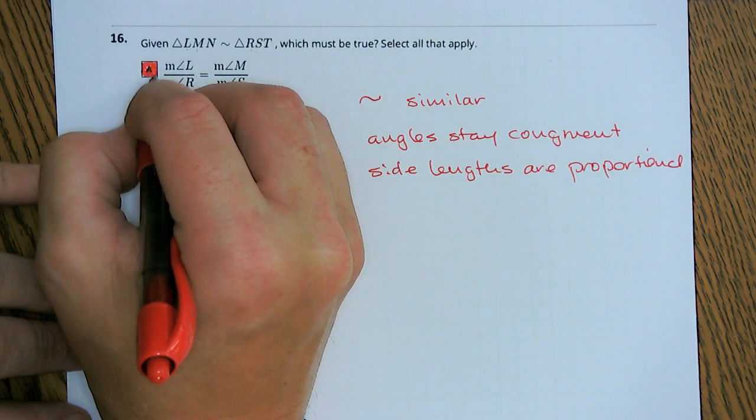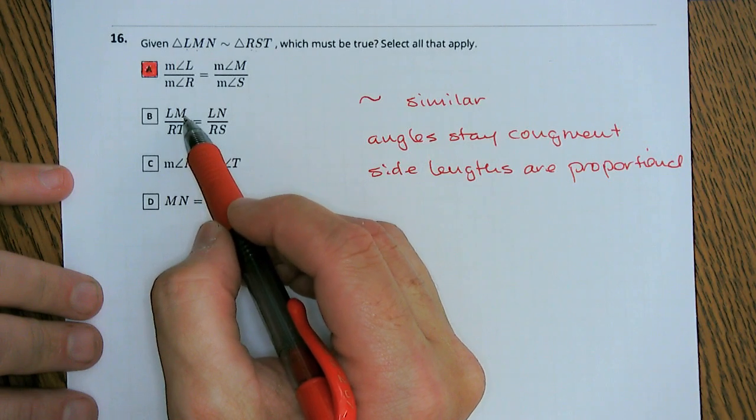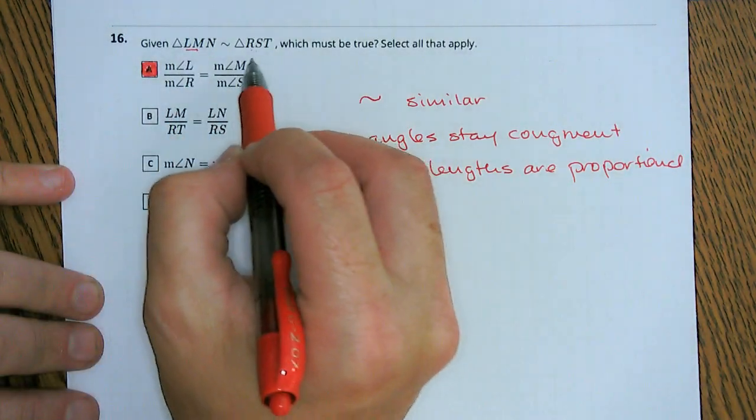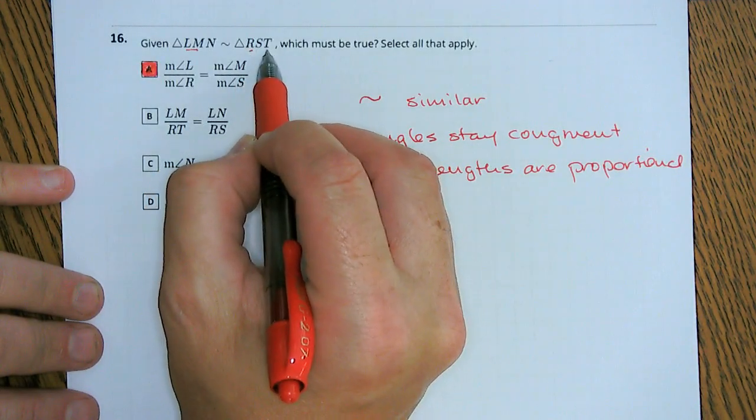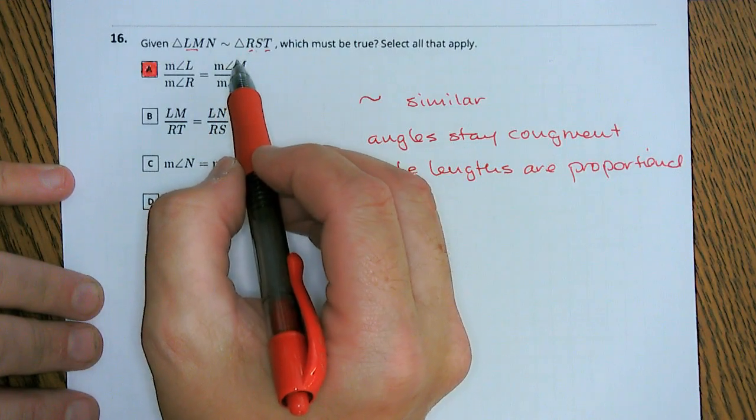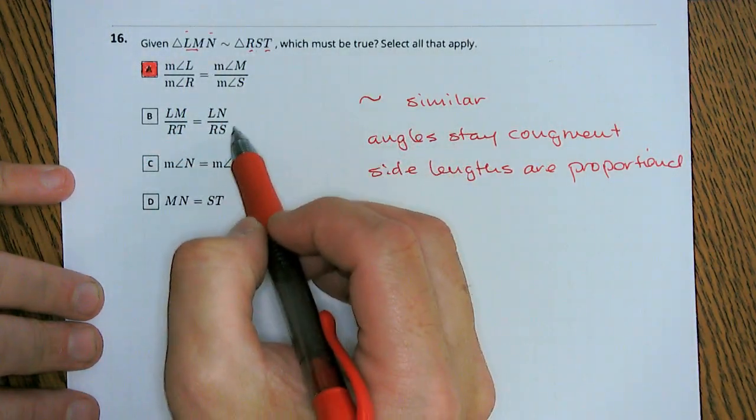So the angle didn't change, and you're comparing the same things to the same thing. LM over RT, well LM, first two letters, RT, first letter, third letter. LN is first third, RS.